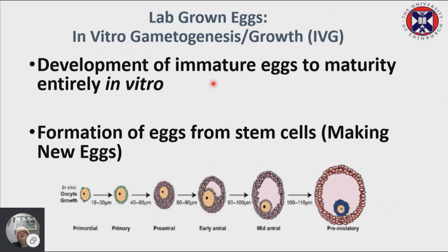We've been looking at the development of the most immature stage — 99.9% of these immature eggs are destined to die — so we're looking at developing them in vitro. We've also been looking at the formation of eggs from stem cells. Recapitulating this process starting from the most immature stage is incredibly complicated; you have to support the oocyte development and the surrounding somatic cells, the ovarian granulosa cells.